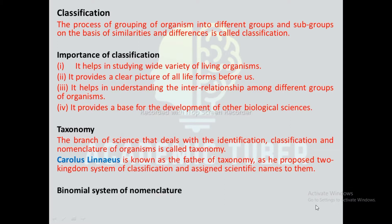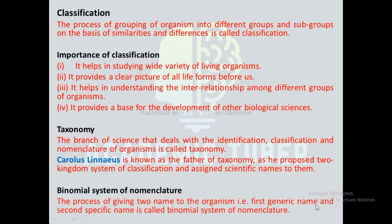Binomial system of nomenclature: The process of giving two names to an organism, i.e. first the generic name and second the specific name, is called the binomial system of nomenclature.